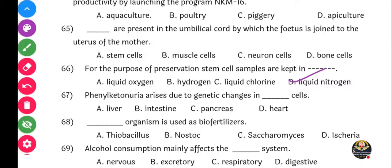Question 67: Phenyl ketonuria arises due to genetic changes in dash. Hela pann PKU ya same hinto so kadhi kadhi tumhala PKU ya short form pann dila jau shakto. Answer is liver - option A is the right answer.